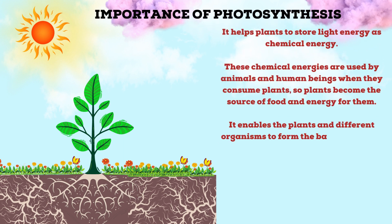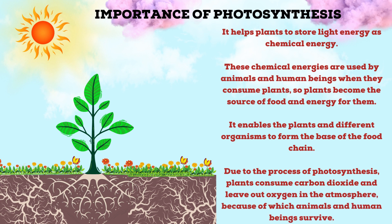Photosynthesis helps plants to store light energy as chemical energy. These chemical energies are used by animals and human beings when they consume plants, so plants become the source of food and energy for them. It enables plants and different organisms to form the base of the food chain. Due to photosynthesis, plants consume carbon dioxide and release oxygen into the atmosphere, because of which animals and human beings survive.